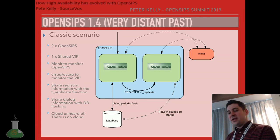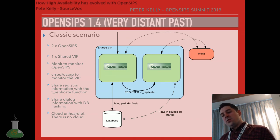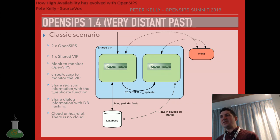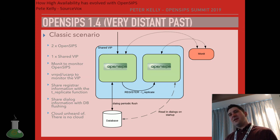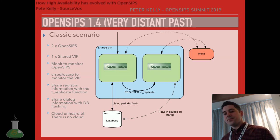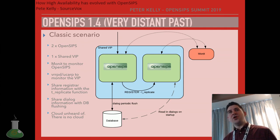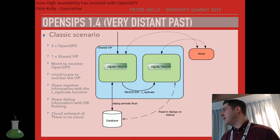You'd manually code that into the configuration and say: I'm going to send you a register packet, you're going to recognize it's been pre-authorized and authenticated, and you're just going to store it in your user location database in case you become the master OpenSIPs. It's quite a complicated and convoluted way of doing it, but it achieves the high availability you need. Similarly, the dialogue module stores information about ongoing dialogues, and in OpenSIPs 1.4 you could flush them to a database, so if anything happened you could read all the information back.